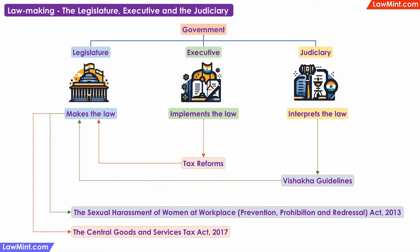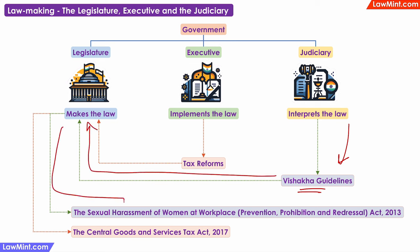Just a couple more examples of how the judiciary and the executive influence the lawmaking process and can lead to the creation of new statutes. In 1997, while deciding on a case, the Supreme Court saw that there were no comprehensive laws to deal with situations involving harassment of women at the workplace. So the court issued a set of guidelines called the Vishaka guidelines. These guidelines not only acted as a law for a long time, they also influenced the creation of a statute — the Harassment Prevention, Prohibition and Redressal Act of 2013.